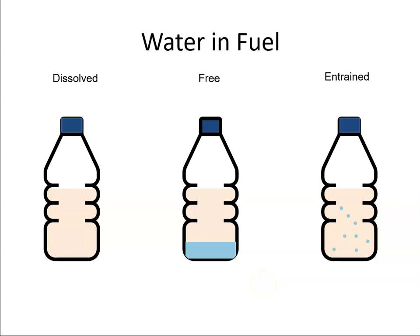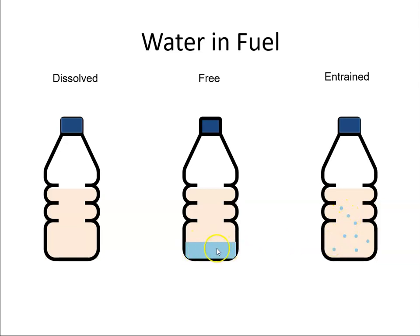Water can exist in fuel in essentially three states. First, dissolved — the water is fully dissolved in the fuel. Second, the water can have broken free from the fuel and becomes free water. A variation of that is where the free water exists in small tiny droplets, which we call entrained. At some stage these droplets might all come together to form a large gathering of free water.